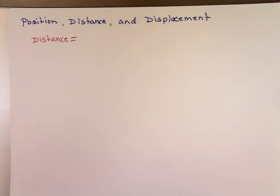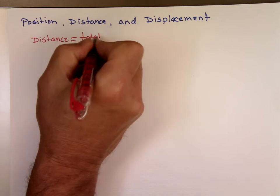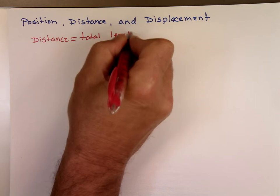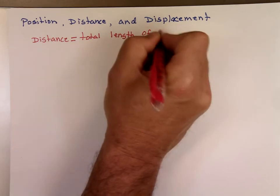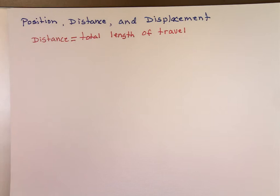Distance is defined as the total length of travel. What does that mean, the total length of travel?